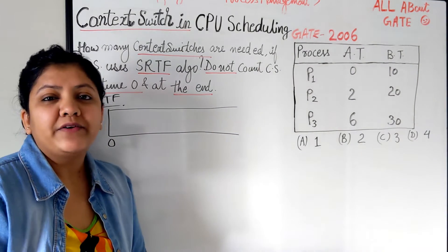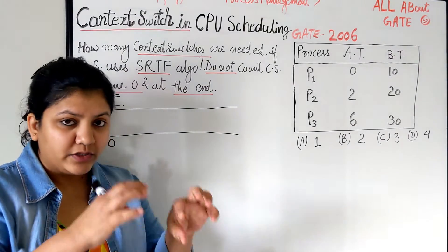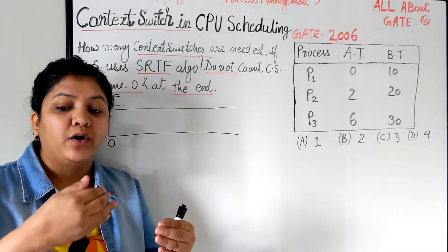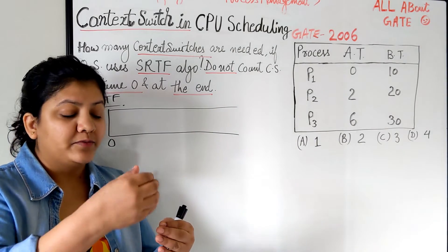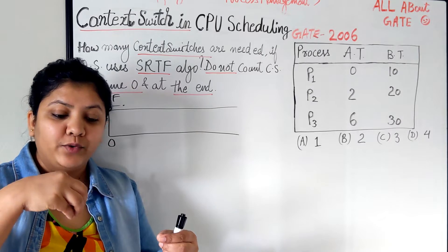So context switch is when a process is running on the CPU and some other process comes in the ready queue which is on priority, or there is a timeout due to round robin scheduling. So the running process has to go back and sit in the ready queue and the selected process has to come and start running.